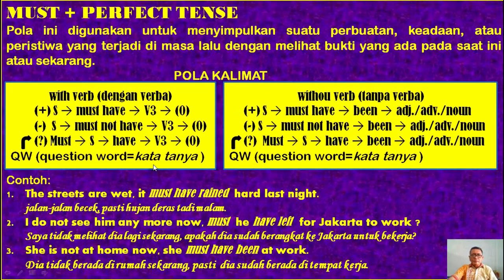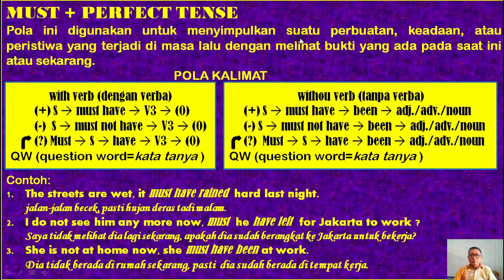Mari kita lihat bersama-sama di layar ini. Topik kita kali ini adalah pola kalimat 'must' diikuti dengan perfect tense. Pola ini digunakan untuk menyimpulkan suatu perbuatan, keadaan, atau peristiwa yang terjadi di masa lalu dengan melihat bukti yang ada pada saat ini atau sekarang.